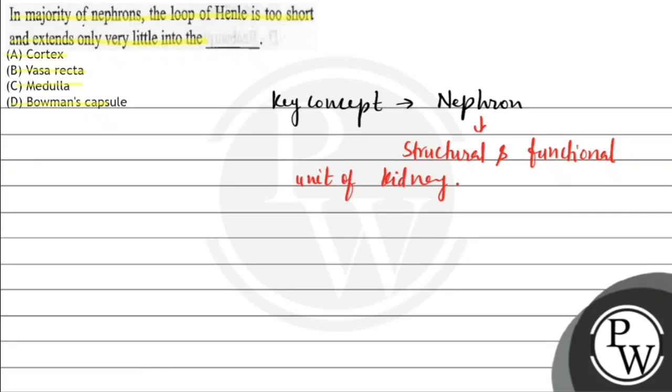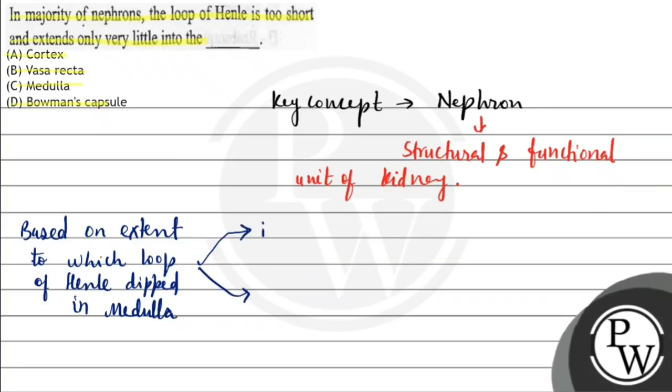Now, the extent of the loop of Henle dipped in medulla is based on the extent to which loop of Henle is dipped in medulla. Based on this, nephron has two types.